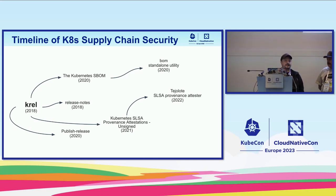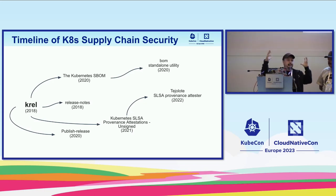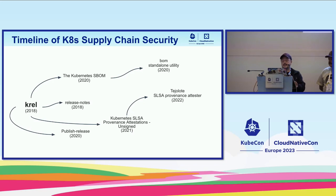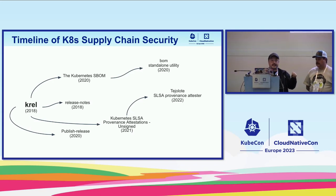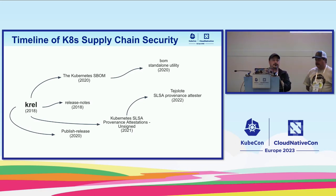When we started thinking about how to make better use of all this code, not just as libraries, the first thing we did was spin out the release notes program — it's integrated into krel so you can use it in your own tooling. Then when we started thinking about supply chain security, we built SBOM-generating libraries into our tooling and spun out a standalone utility called bom, which has evolved into a multi-tool to work with SBOMs: it lets you not only generate them but visualize and query them.